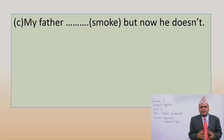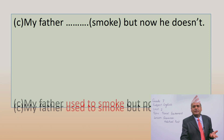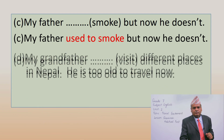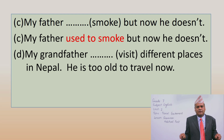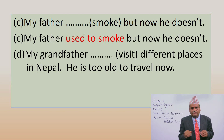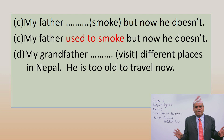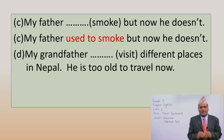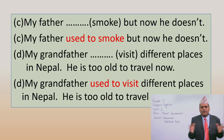My father doesn't smoke — but now he doesn't — means he used to smoke. My father used to smoke but now he doesn't. And next: my grandfather doesn't visit different places in Nepal — he's too old to travel now. That means nowadays my grandfather cannot travel anymore, but in the past he had the habit of visiting different places. My grandfather used to visit different places in Nepal. He's too old to travel now.